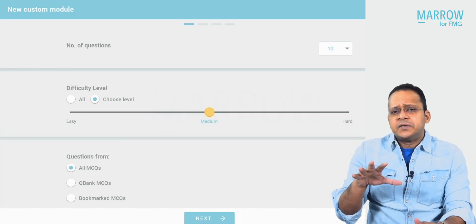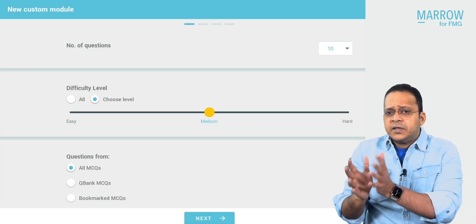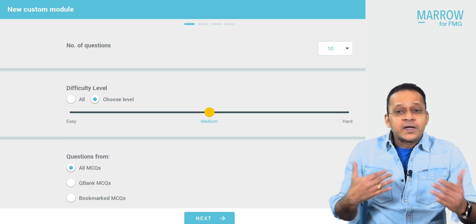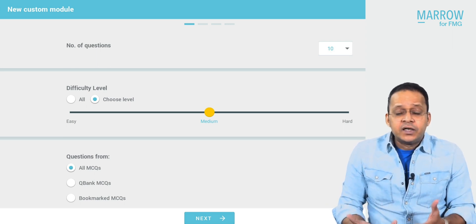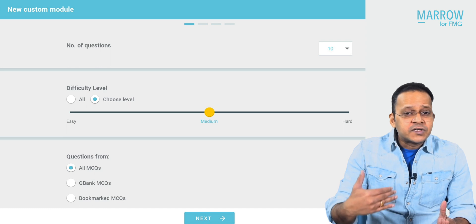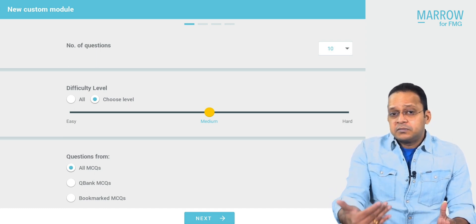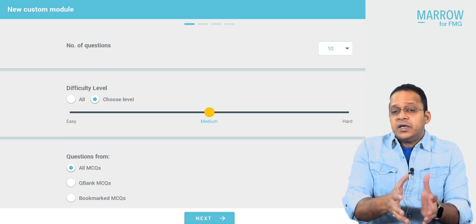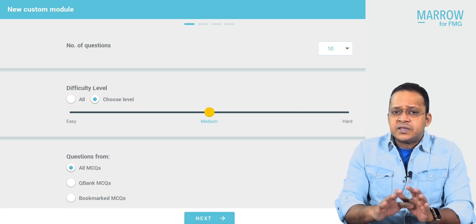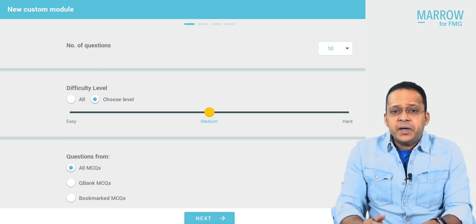That's one part done — how to select the number of questions. Now coming to the second part: difficulty level. For the FMG exam, I told you we'll select medium difficulty. I won't go to the difficult level. Why? Because the FMG exam is not a competitive exam — you're not competing with each other. Everyone can come out as a winner. You just need to score 50% and pass. But if you're competing for a particular rank, then you need to solve hard questions as well. So for FMG, easy and medium level questions — my job is done. I'll keep difficulty level at medium.